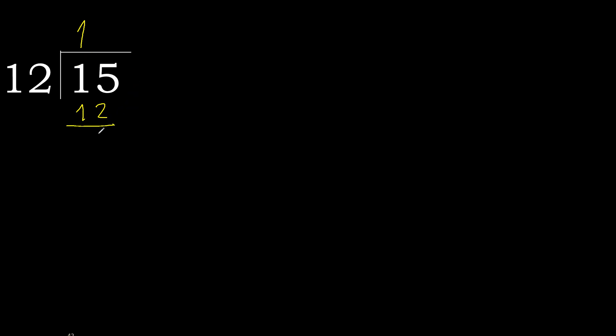Subtract — remainder is 3. Next: there is no number, therefore complete. Always complete with 0 here, with a point — add a decimal point and bring down a 0.